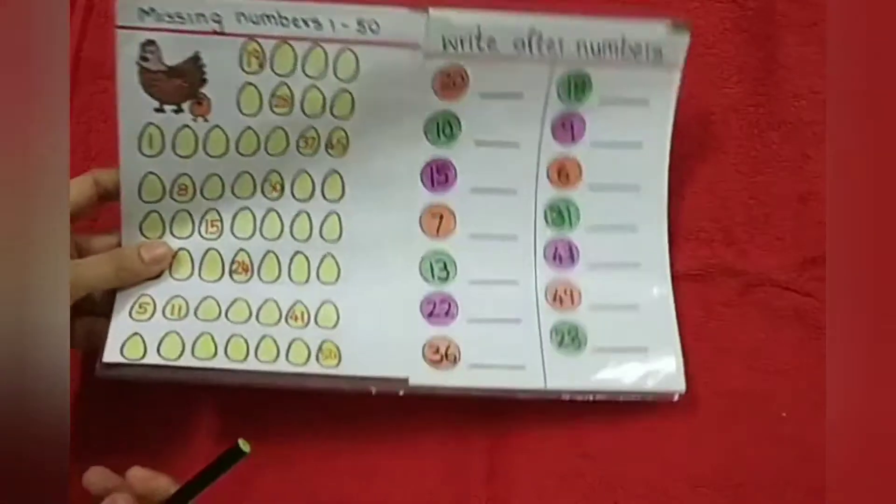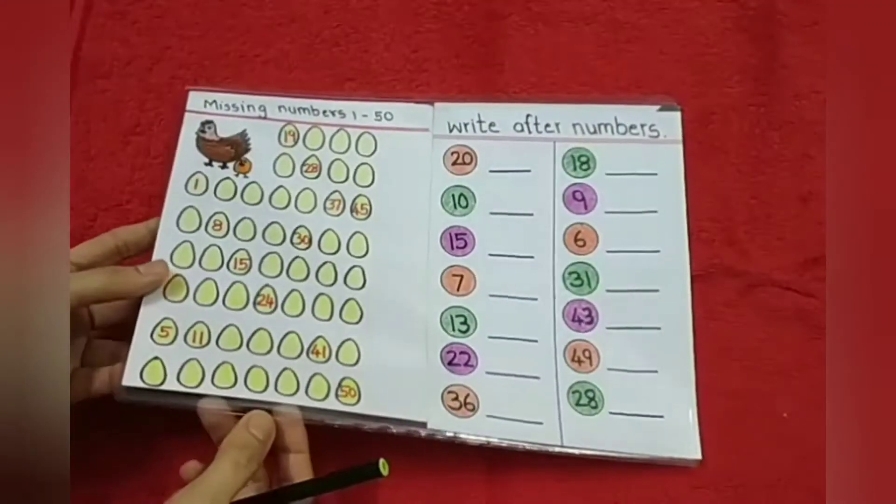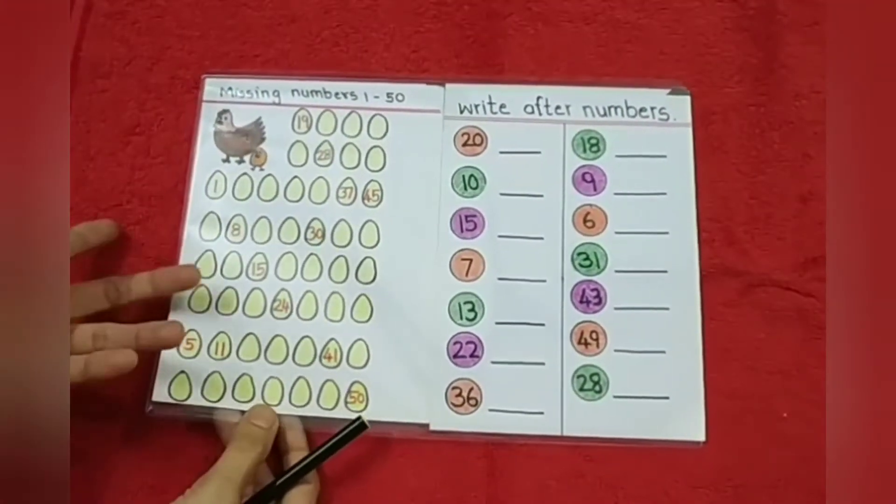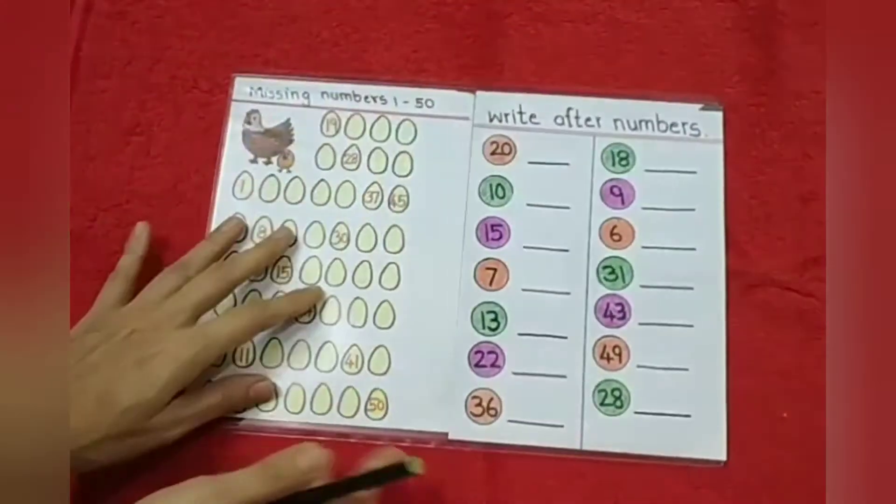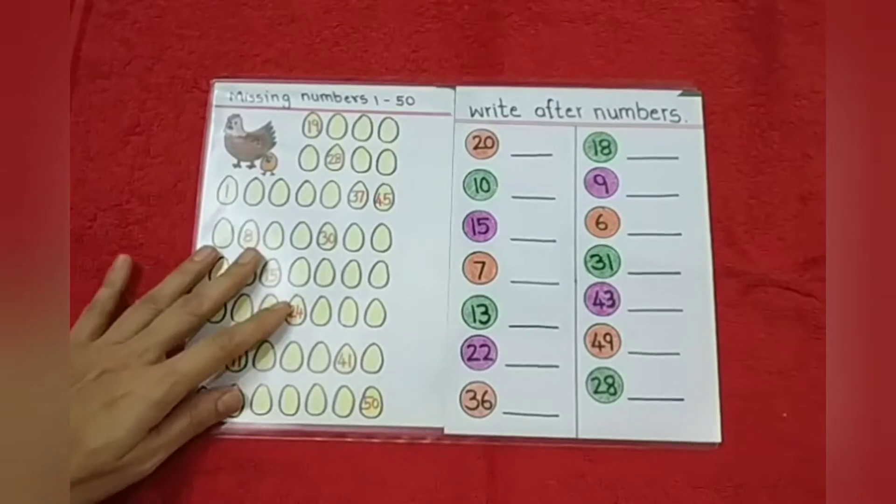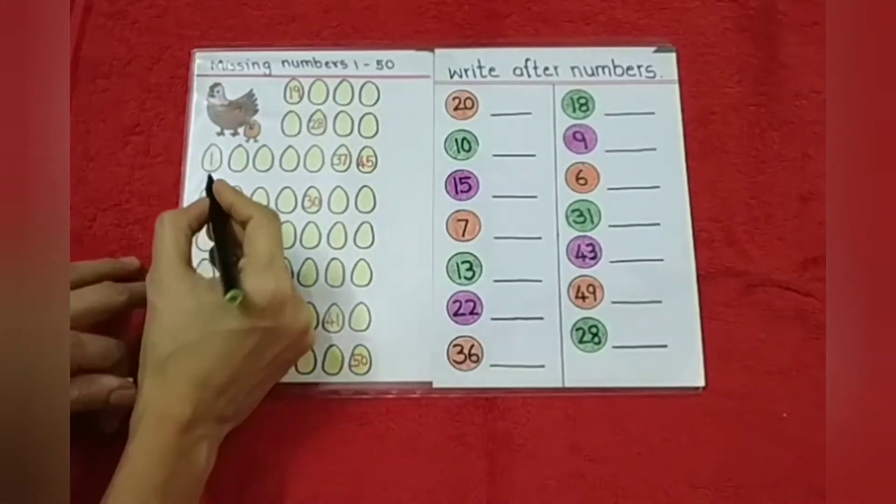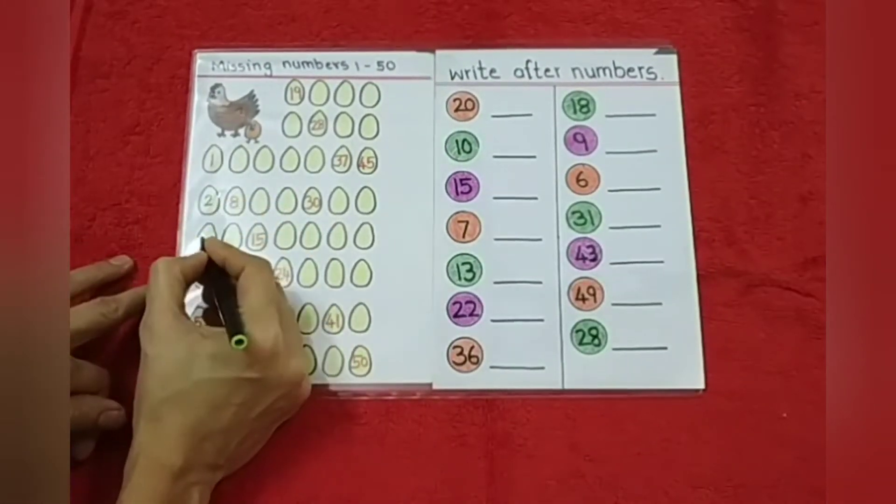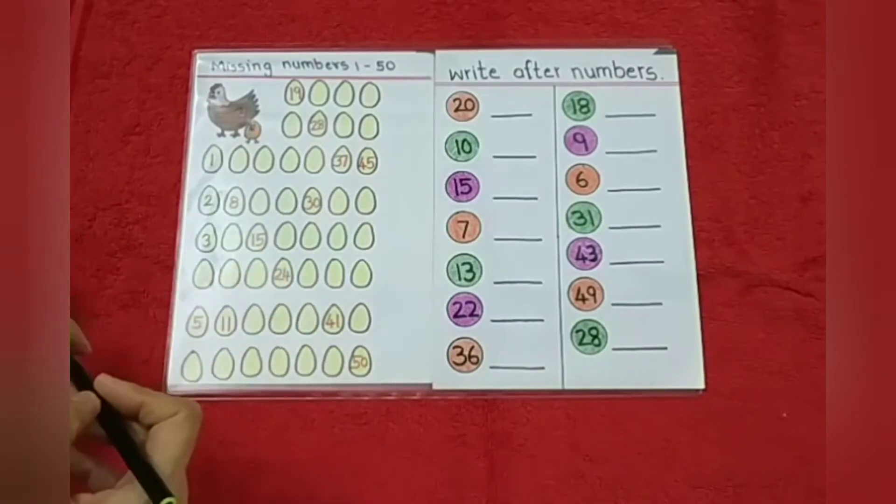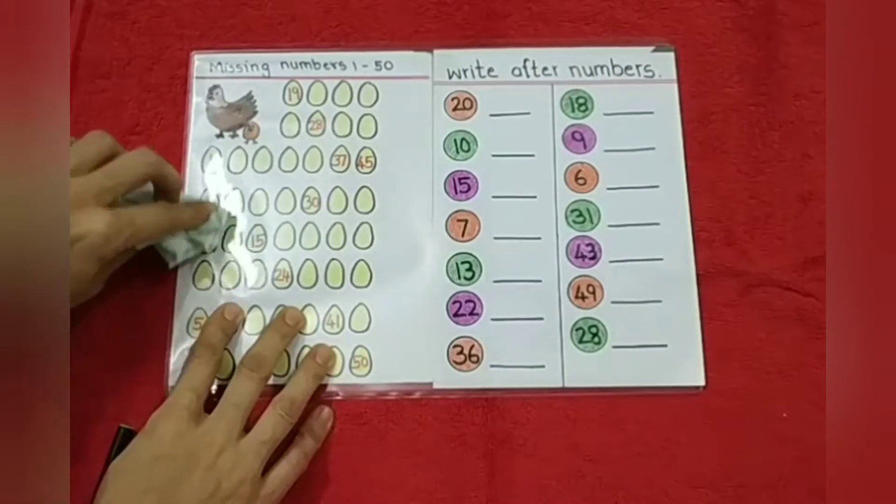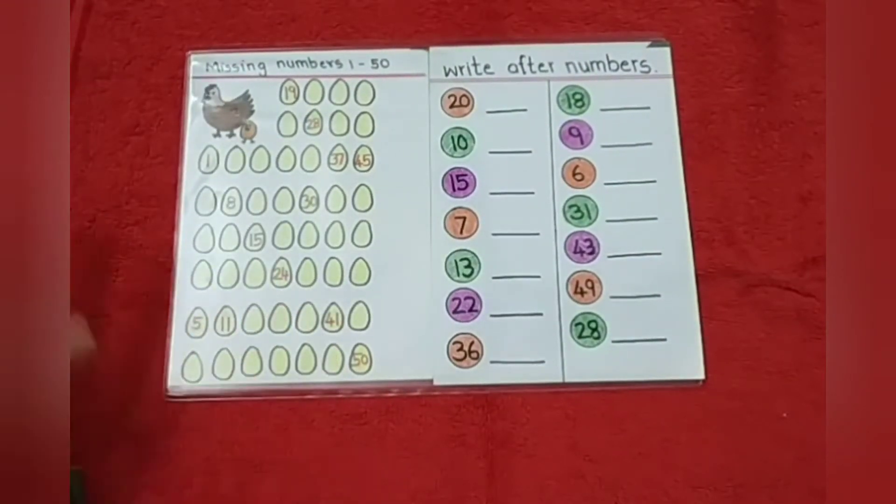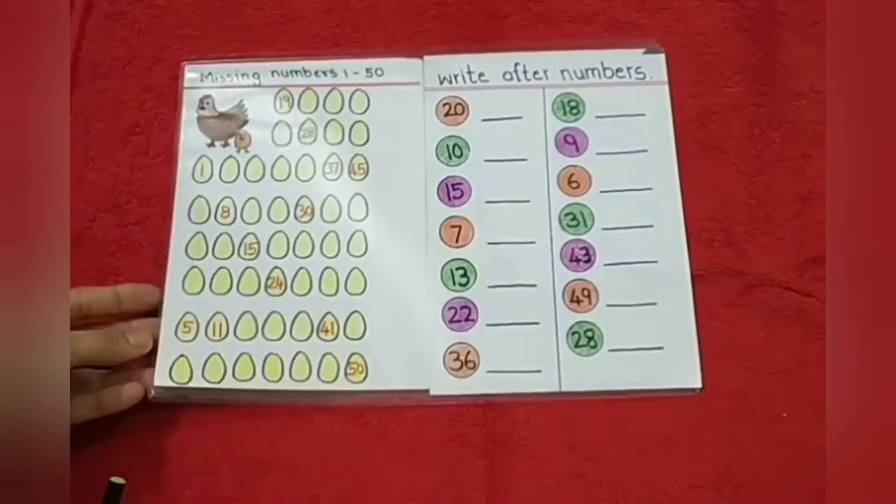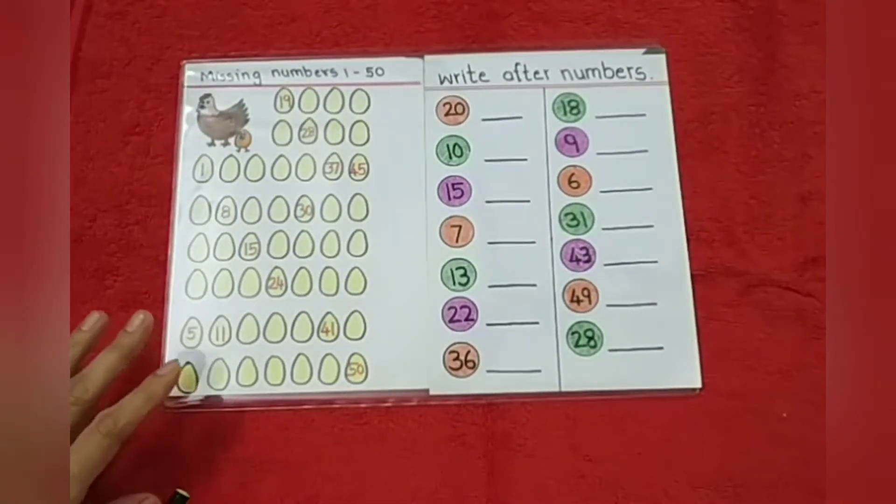Friends, you can also make these reusable worksheets. You just have to do that when you make the worksheets. After that, if you get any plastic cover like this, you just have to put the paper inside and this will become reusable. For example, if I write the answer here and after that if I want to erase and I have to ask the child to write again, we can do this. This way you can just clean it and the worksheet will be again new.